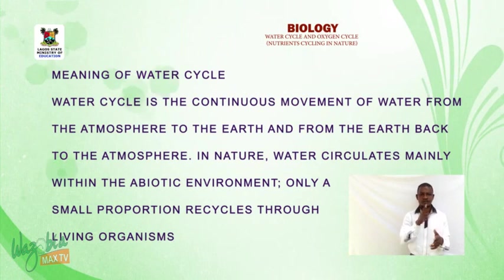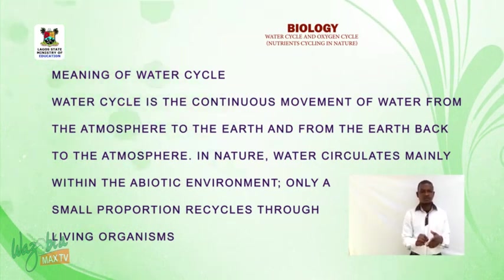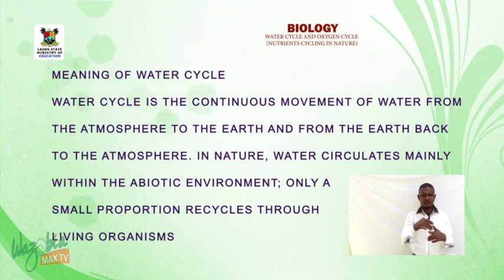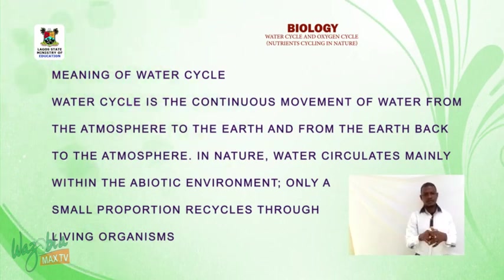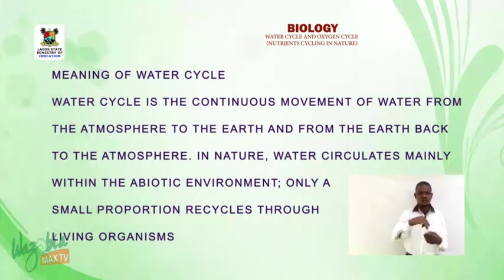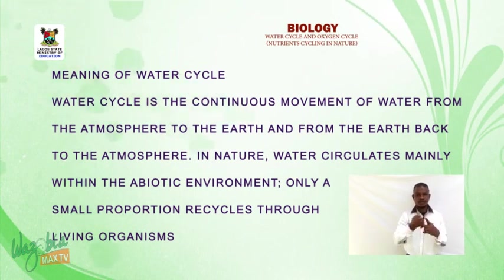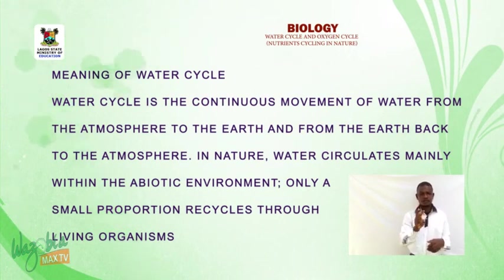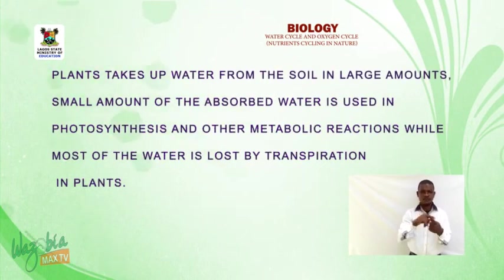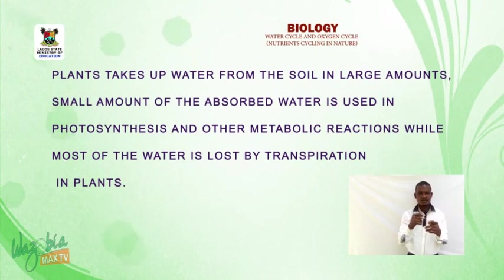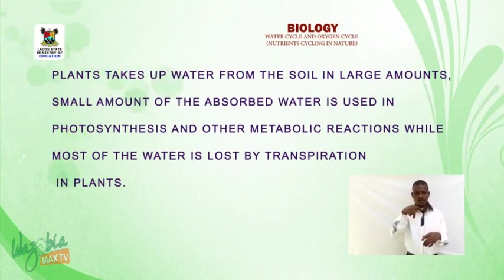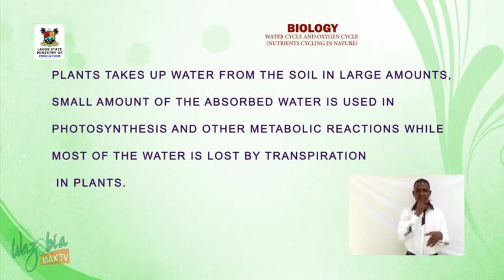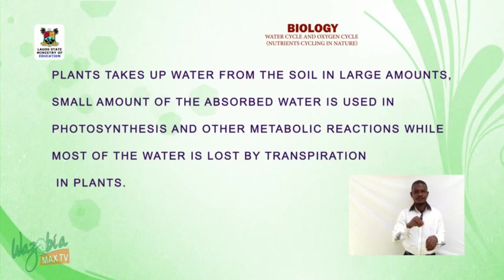Water cycle is the continuous movement of water from the atmosphere to the earth and from the earth back to the atmosphere. In nature, water circulates mainly within the abiotic environment; only a small proportion recycles through living organisms. Plants take up water from the soil in large amounts. A small amount of the absorbed water is used in photosynthesis and other metabolic reactions, while most of the water is lost by transpiration.